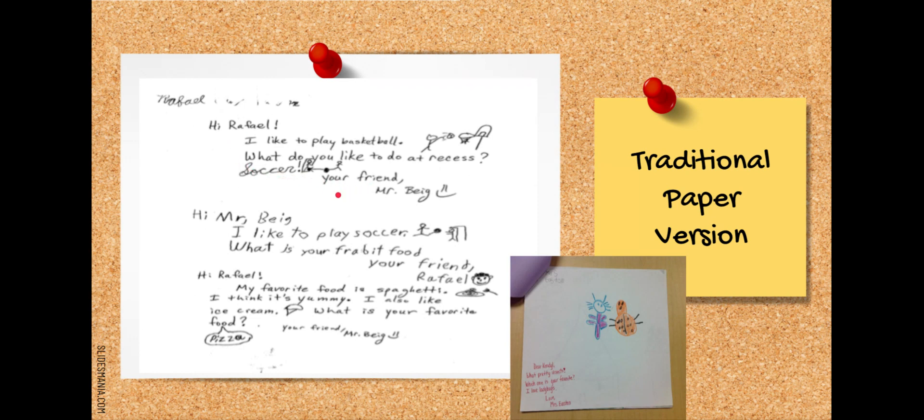The student and the teacher both use sketches. If there are mistakes in the student's writing, for example, down here, you'll notice the student was trying to spell favorite and misspelled it. Instead of correcting the student's language, the teacher modeled the correct way to spell favorite here.